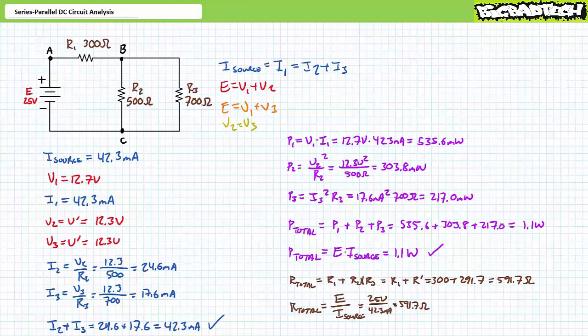Circuit analysis at its core is an understanding of the fundamental properties of those circuits under inspection, put to use in an organized fashion. For series circuits: current through elements in series is the same; Kirchhoff's voltage law states for any closed loop the sum of voltage rises equals the sum of voltage drops — what goes up must come down. For parallel circuits: voltage across elements in parallel is the same; Kirchhoff's current law states the sum of currents entering a node equals the sum of currents leaving a node — what goes in must come out. Series-parallel circuit analysis is simply the determination of what's in series and what's in parallel, then applying the appropriate properties to the appropriate simplifications.